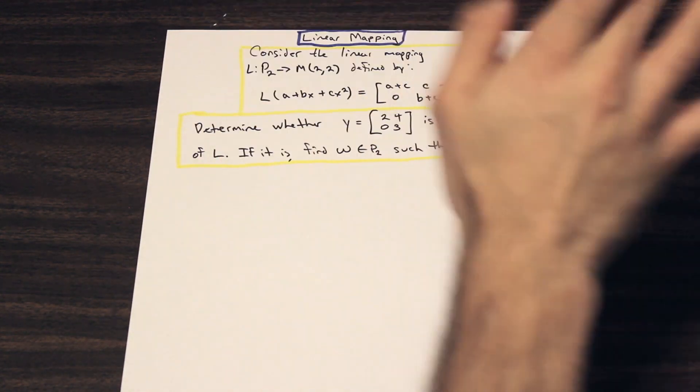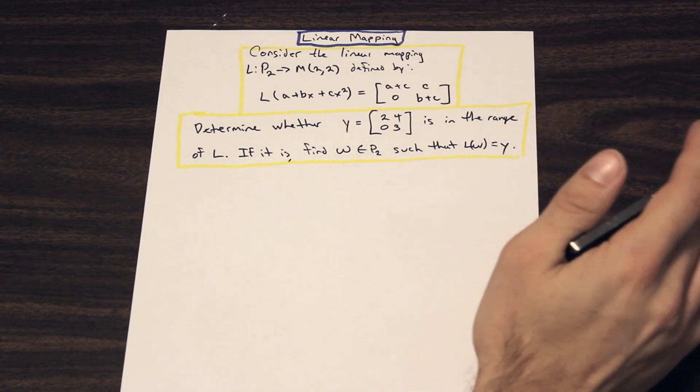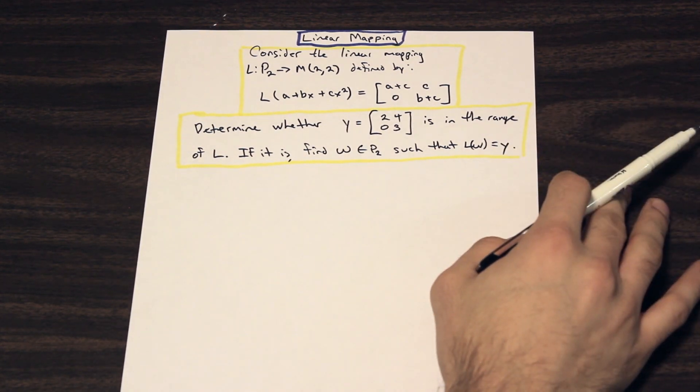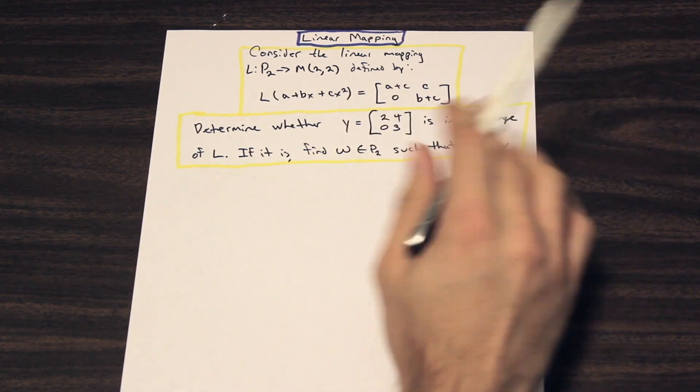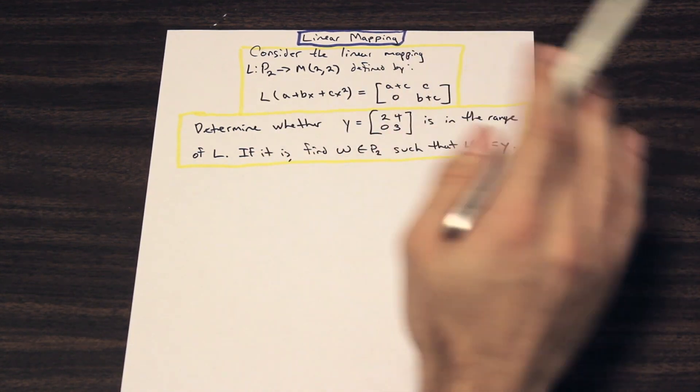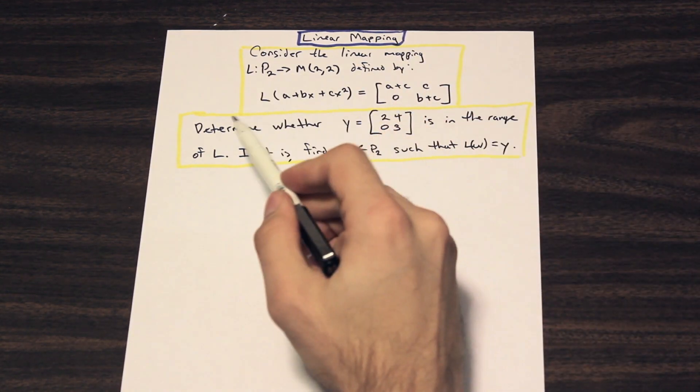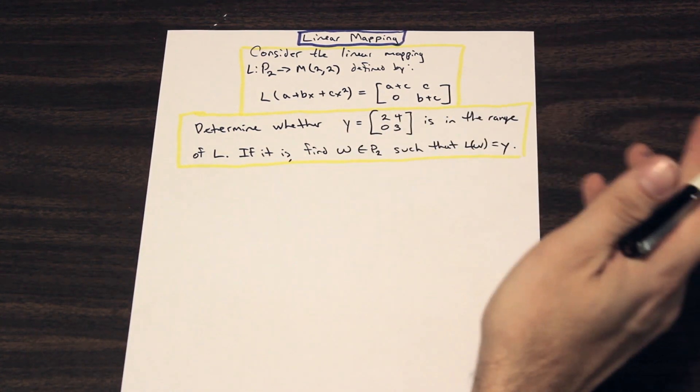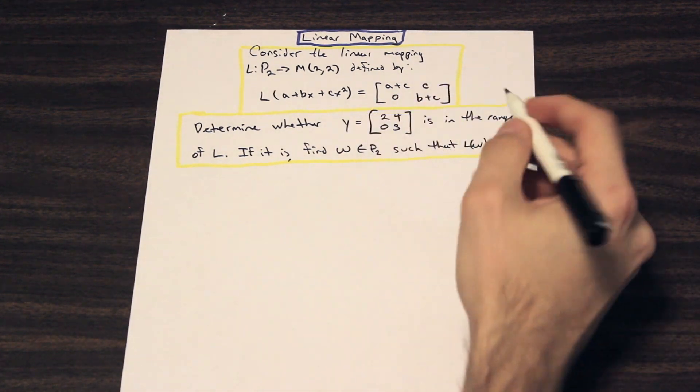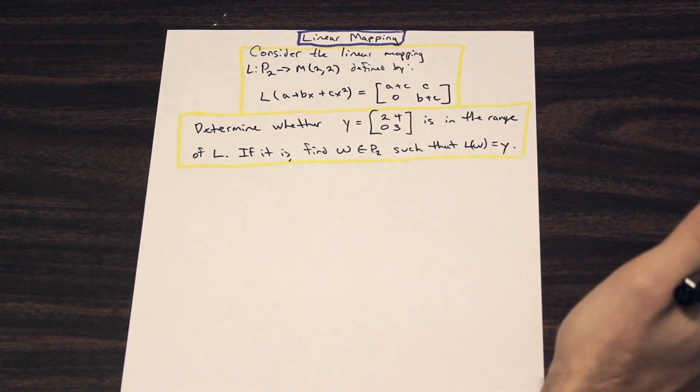So that's all you need to know. Don't worry too much about what's going on here. This is my opinion. I mean, this is how my colleagues and I got through this course. So don't get too confused or too hung up with all these weird little notations here. They're not really that relevant. Determine whether Y equals this matrix here, is this 2 by 2 matrix, is in the range of L. If it is, find W belongs to P2 such that L(W) equals Y.